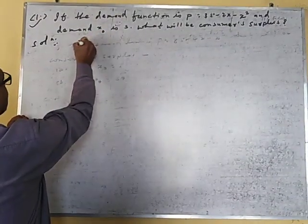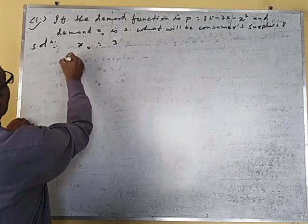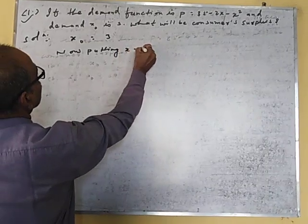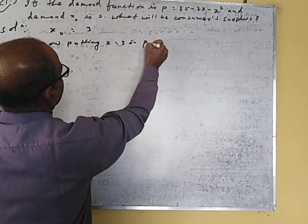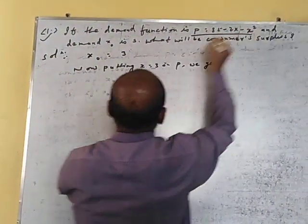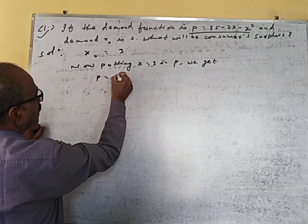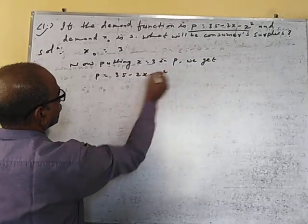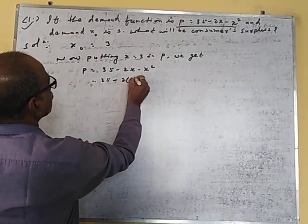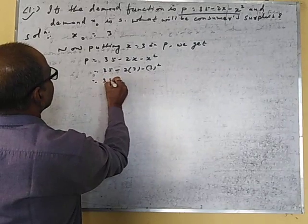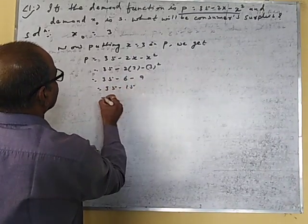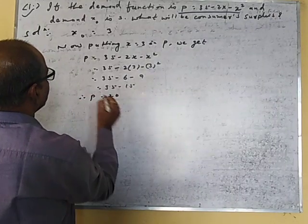This is the solution. If x₀ is equal to 3, now put x equal to 3 in P. So P is equal to 35 minus 2x minus x square. Putting x equal to 3: 35 minus 2 into 3 minus 3 square, that is 35 minus 6 minus 9, which gives 35 minus 15, so P is equal to 20.